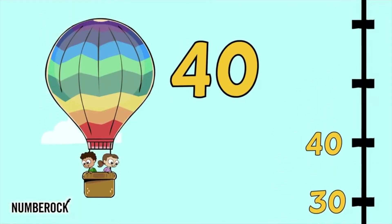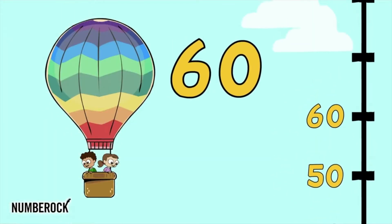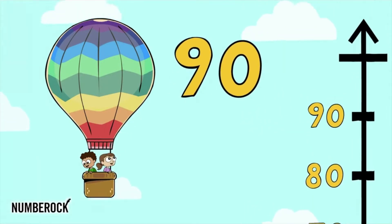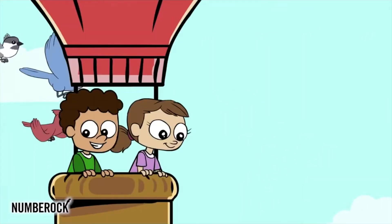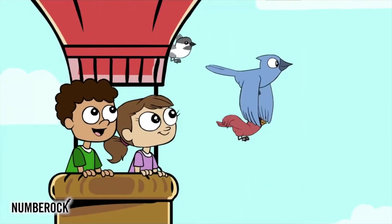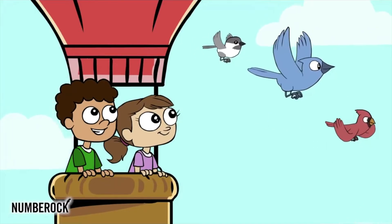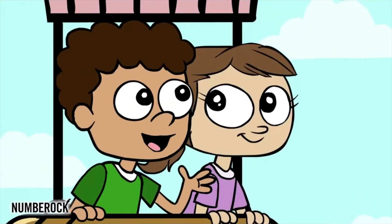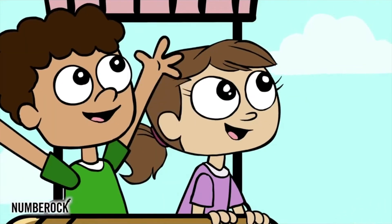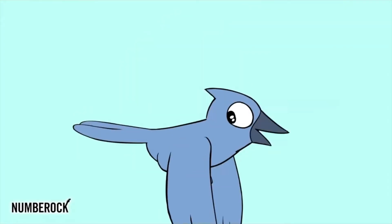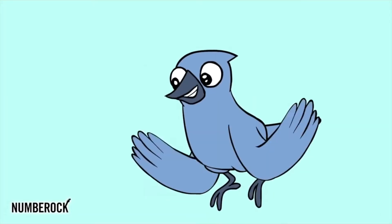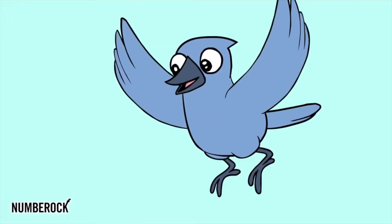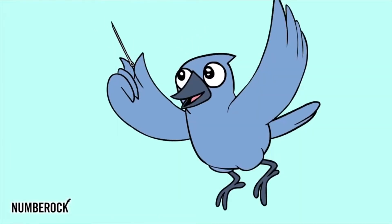Counting up by tens: 10, 20, 30, 40, 50, 60, 70, 80, 90, and then 100. Then we saw a Blue Jay flying with his friends and asked him to sing along with us to count by tens. He said: 'Excuse me, sir and madam, but I am just a bird. For me to count by tens would simply be absurd.'